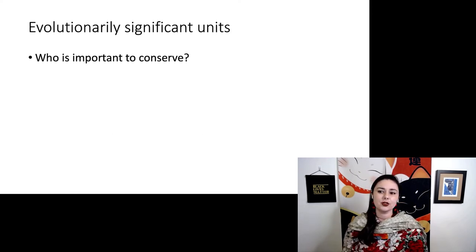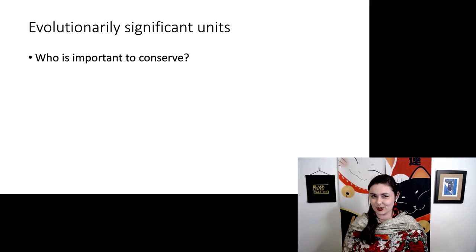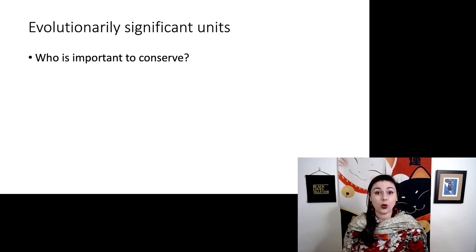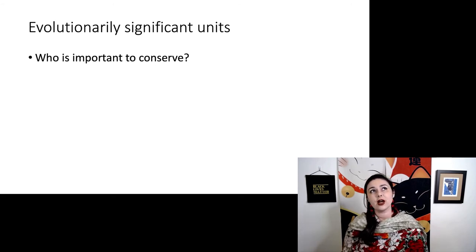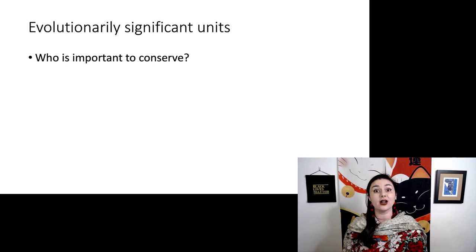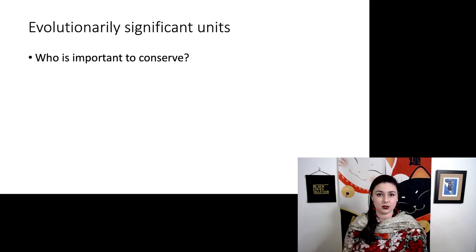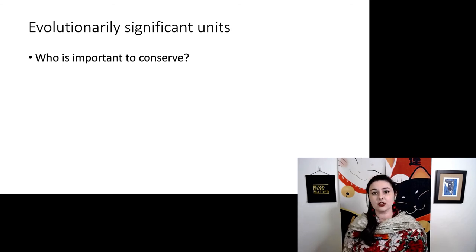Lastly, some people want to get away from the idea of species altogether — or at least when talking about conservation and which species are important to conserve. This is where the idea of evolutionarily significant units comes in: we're trying to figure out which populations are important and significant for evolution and worth putting energy and resources into conserving. Right now, we mostly use the biological species concept to determine what gets onto a conservation list. The biological species concept is a little broad, so there are fewer recognized species, meaning important populations might get left off and not conserved.